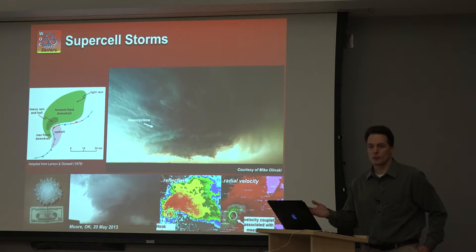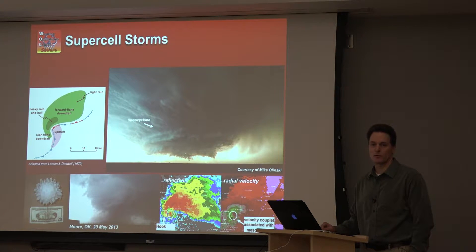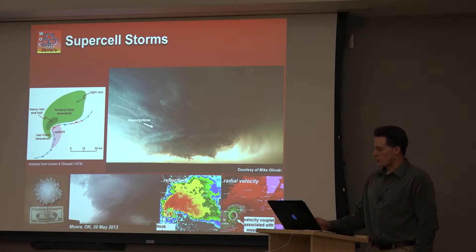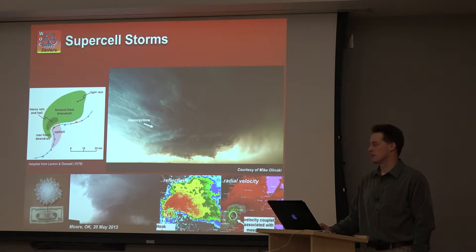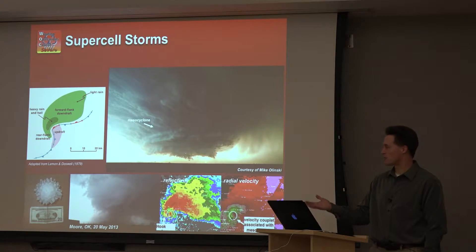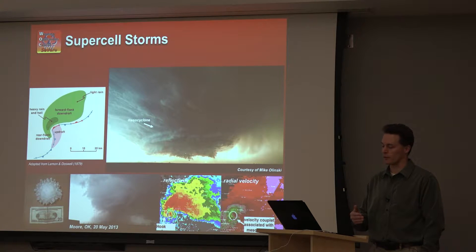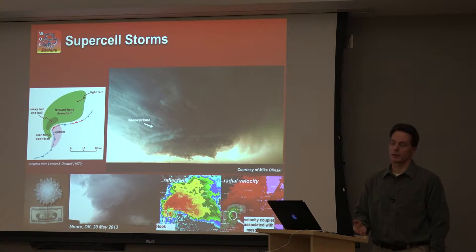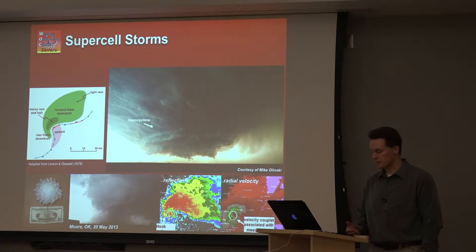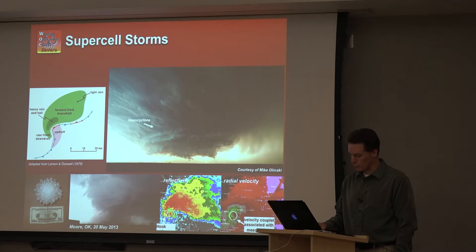Hopefully everybody's familiar with the supercell thunderstorm. This is just a series of images from work that's been done over the last thirty to forty years, much of it here in the United States. The characteristic supercell — the Browning model, which came out in the mid-sixties but was updated by Doswell and Lemon in the late seventies — characteristic hook echo shape, mesocyclone. The mesocyclone is what we're going to focus on today because that is the primary defining characteristic of a supercell thunderstorm. These storms are responsible for very large hail production, some of the most intense tornadoes on record, and quite a bit of damage potential, so it's very important to understand how to forecast these events properly.